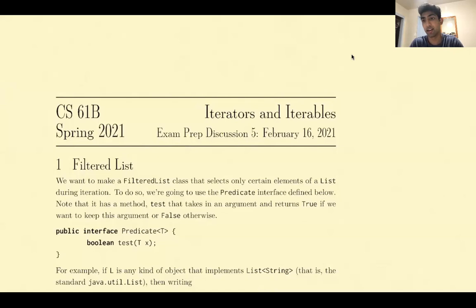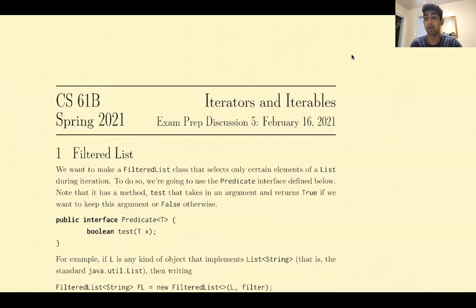Hi everyone. This is going to be a video walkthrough of problem one on CS621B Spring 2021, example of discussion number five on iterators and iterables. I expect you guys to have a basic understanding of iterators and iterables, and I'll be emphasizing an intuition on how to approach iterator questions in the future, as well as iterables.